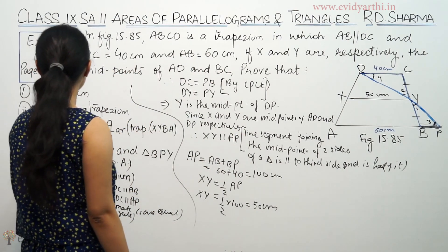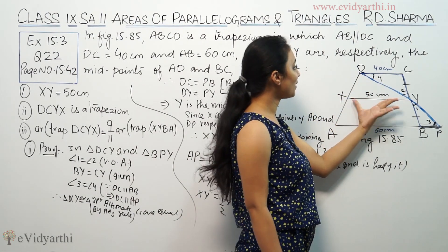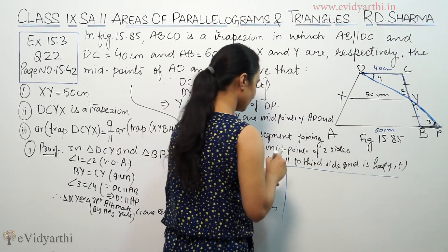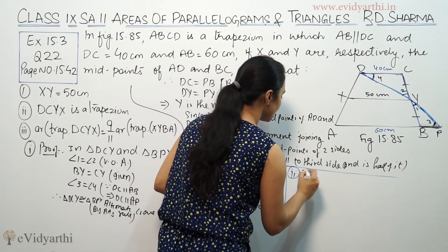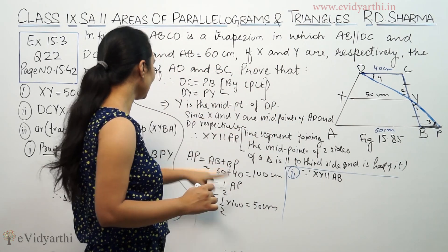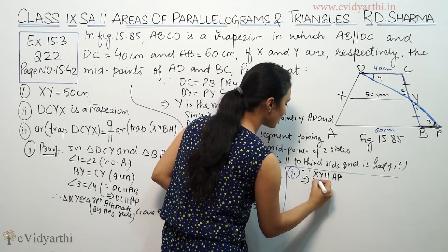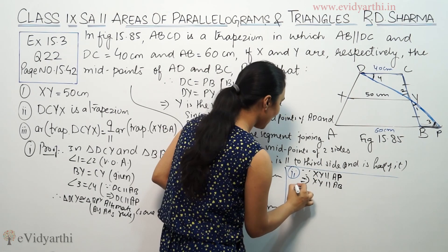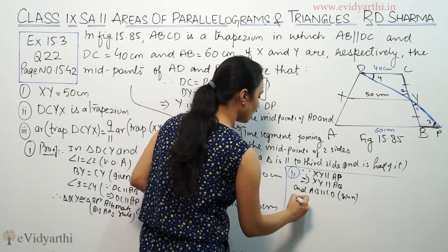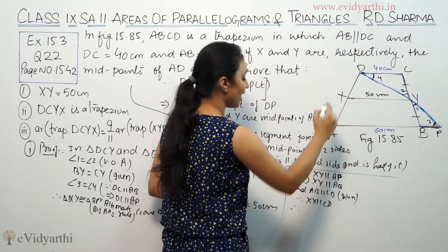Now for part 2, we have to prove that DCYX is a trapezium. Since XY is parallel to AB, and AB is parallel to CD, this implies XY is parallel to CD. Therefore DCYX is a trapezium, as one pair of opposite sides is parallel.